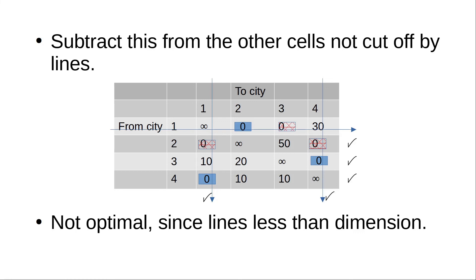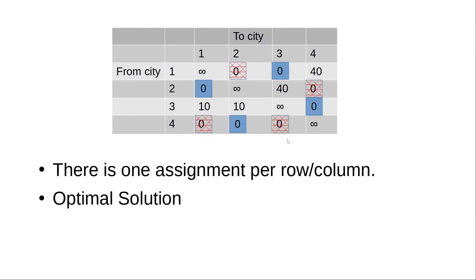We again look at cells not cut by the lines: values are 50, 20, 10, and 10. The least value is 10. We can arbitrarily take either 10 and subtract — this gives us updated cell values of 0, 0, 10, and 40 in the relevant positions. The new table is now formed. Box and crosses have already been applied to this new table.